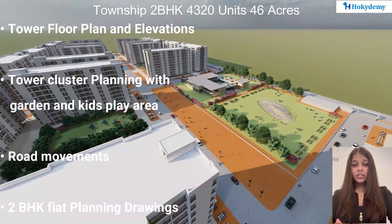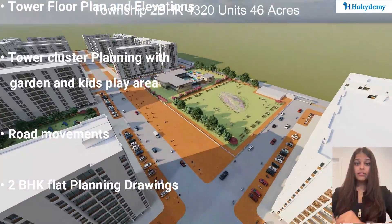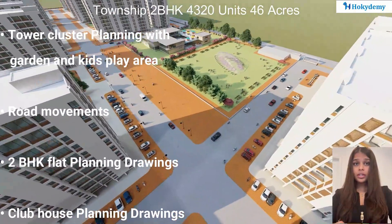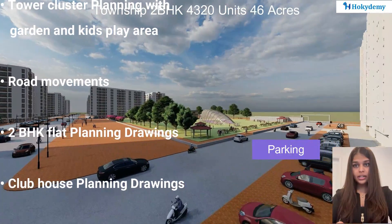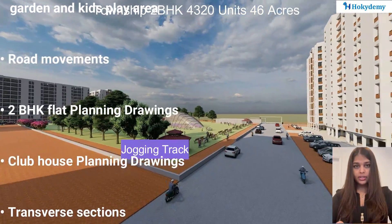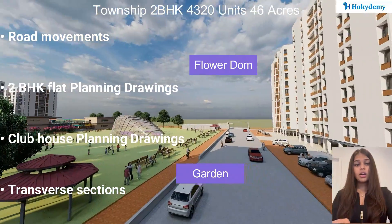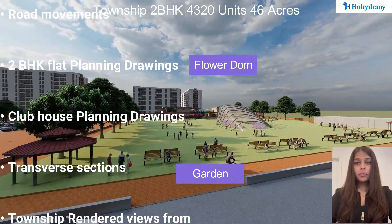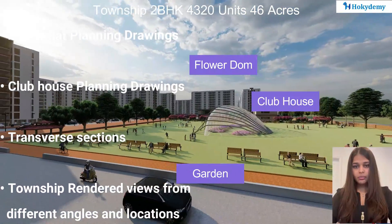There are nine different clusters designed within the township, each with four individual towers, two-wheeler and four-wheeler accessible parking areas, and common walking and jogging areas. Here is the flower dome, a concept inspired by Singapore's Gardens by the Bay, where people can enjoy their time.